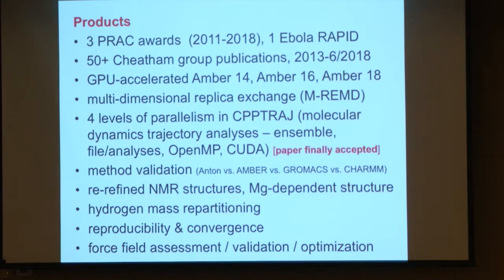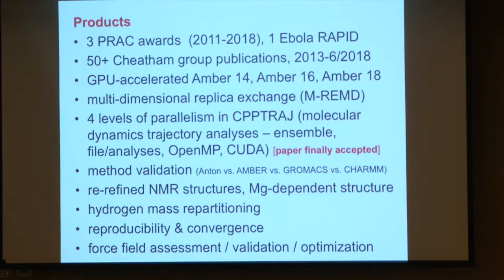I liked what Juan did in his talk where he discussed the products of the Blue Waters effort, so I borrowed that idea. We've had three PRAC awards and one Ebola rapid award, probably about 50 publications since about 2013 when we started using the machine, really enabled by the GPU acceleration of AMBER. We've seen releases of AMBER 14, AMBER 16, and AMBER 18 over this time frame — number 18 just came out in April.